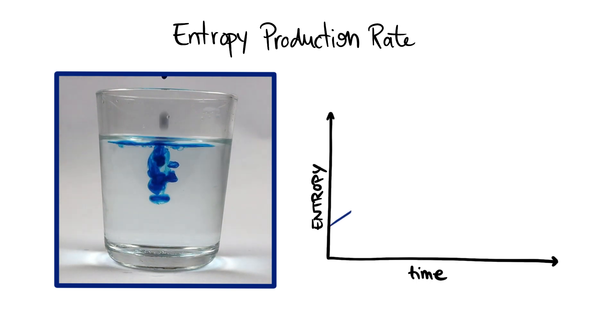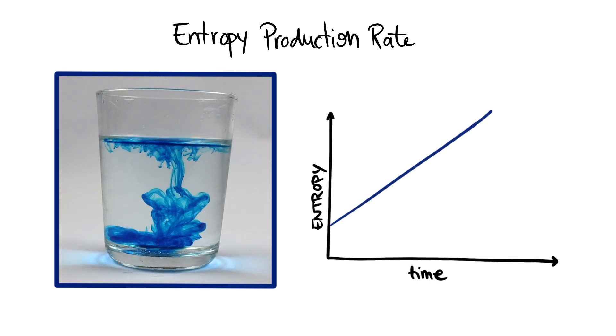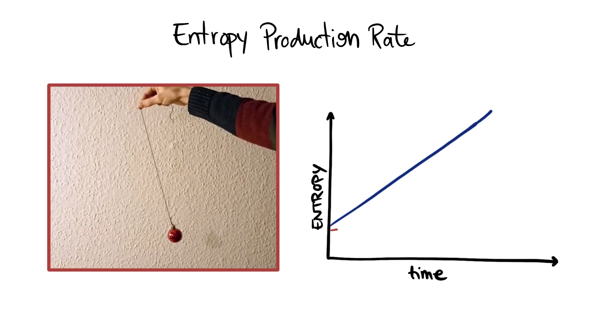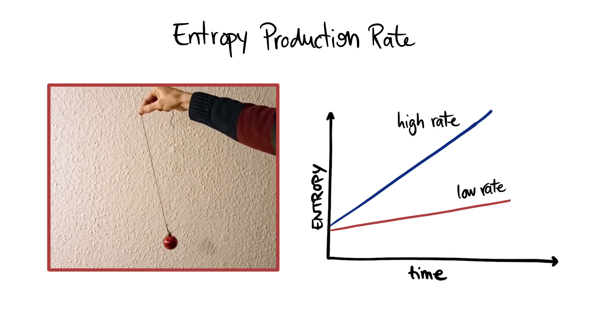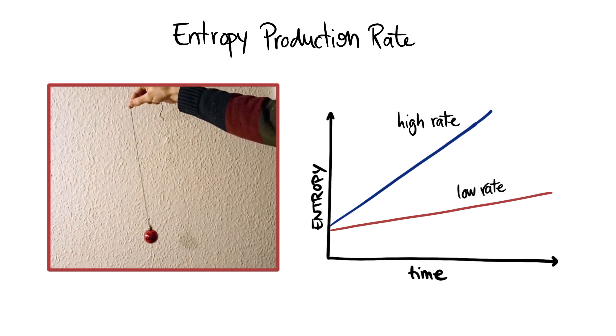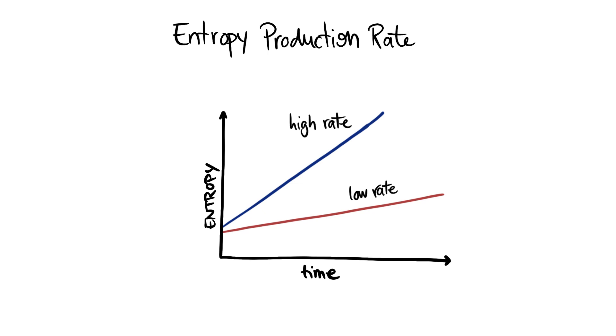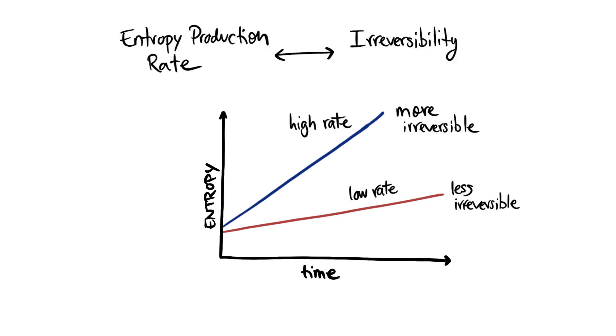The mixing system quickly evolves towards a mixed and structureless state, whereas this pendulum takes quite a while to slow down because it experiences little friction. So these examples reveal a direct relation between the entropy production rate and irreversibility. The higher the rate, the more irreversible a process is.